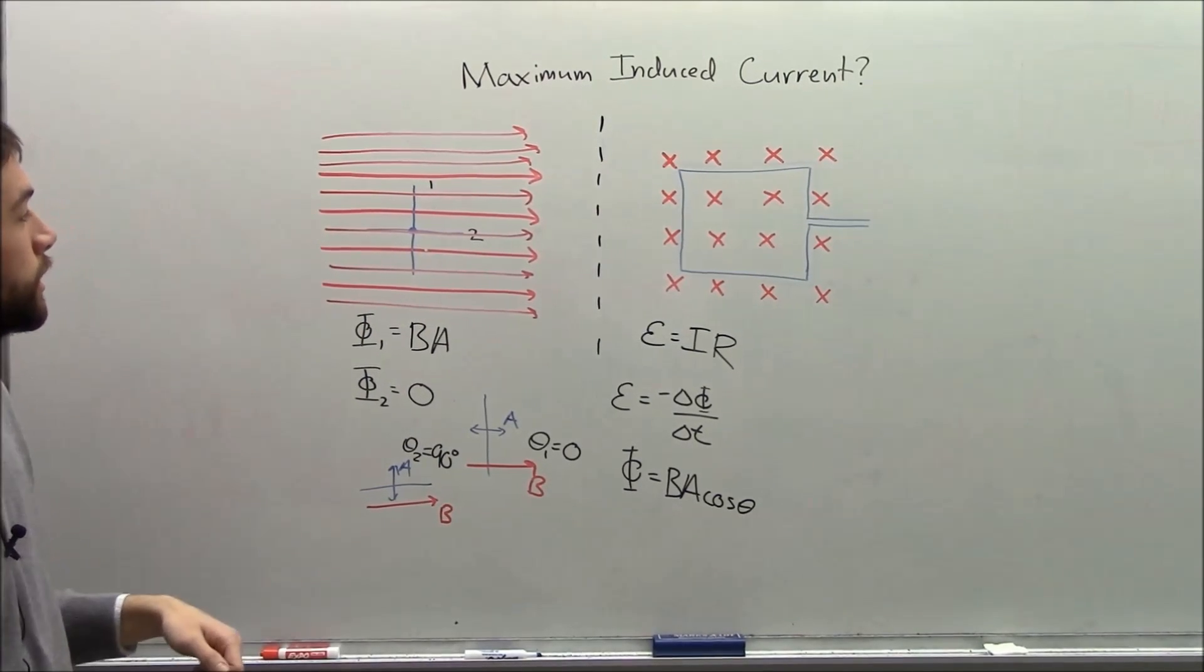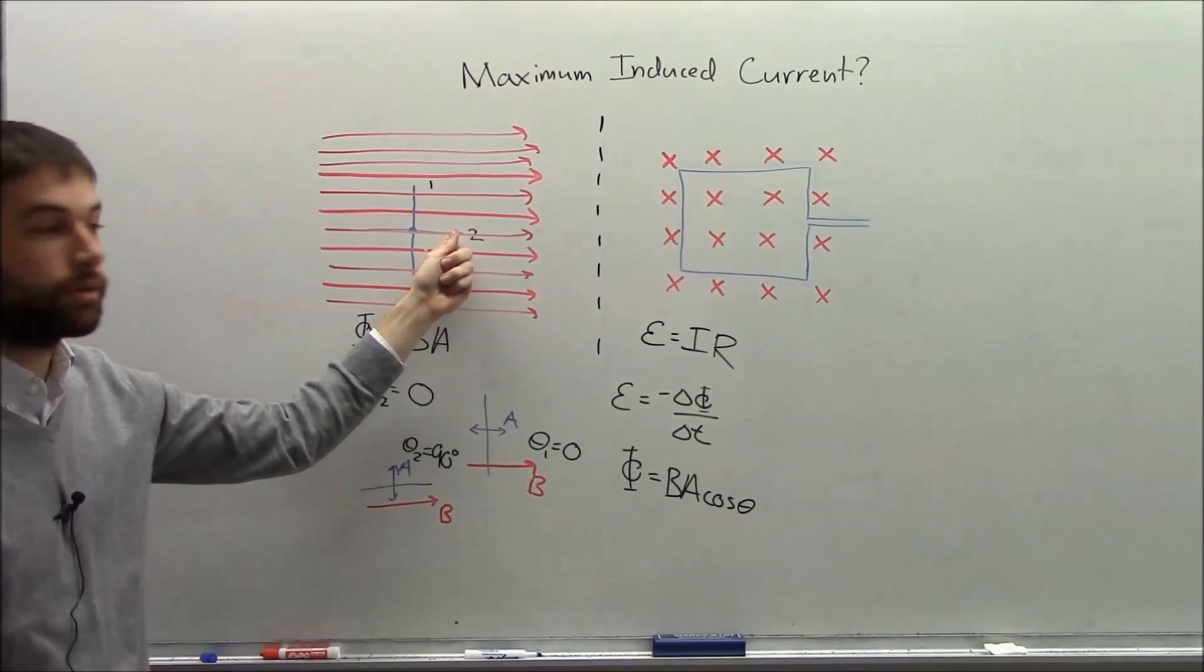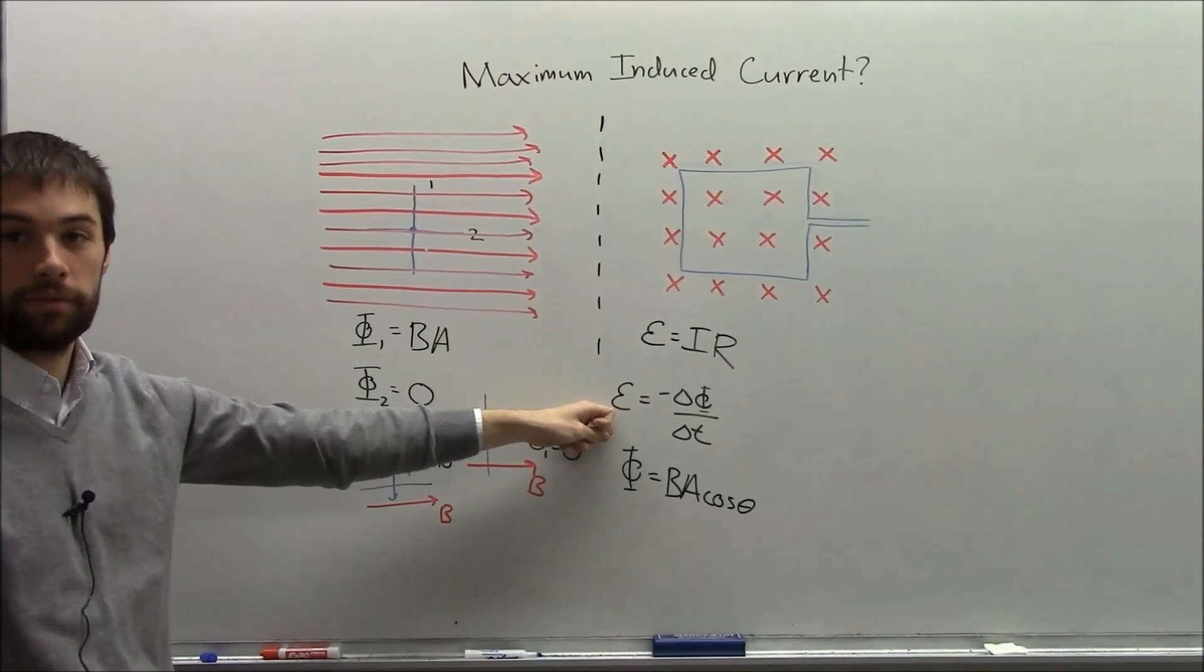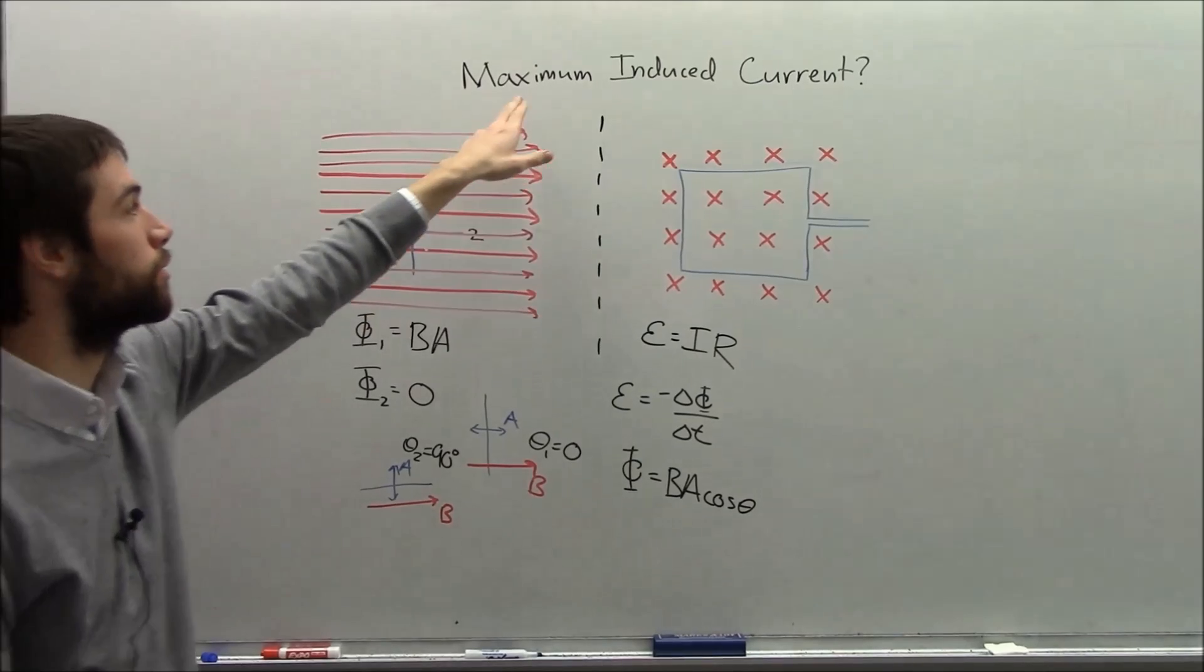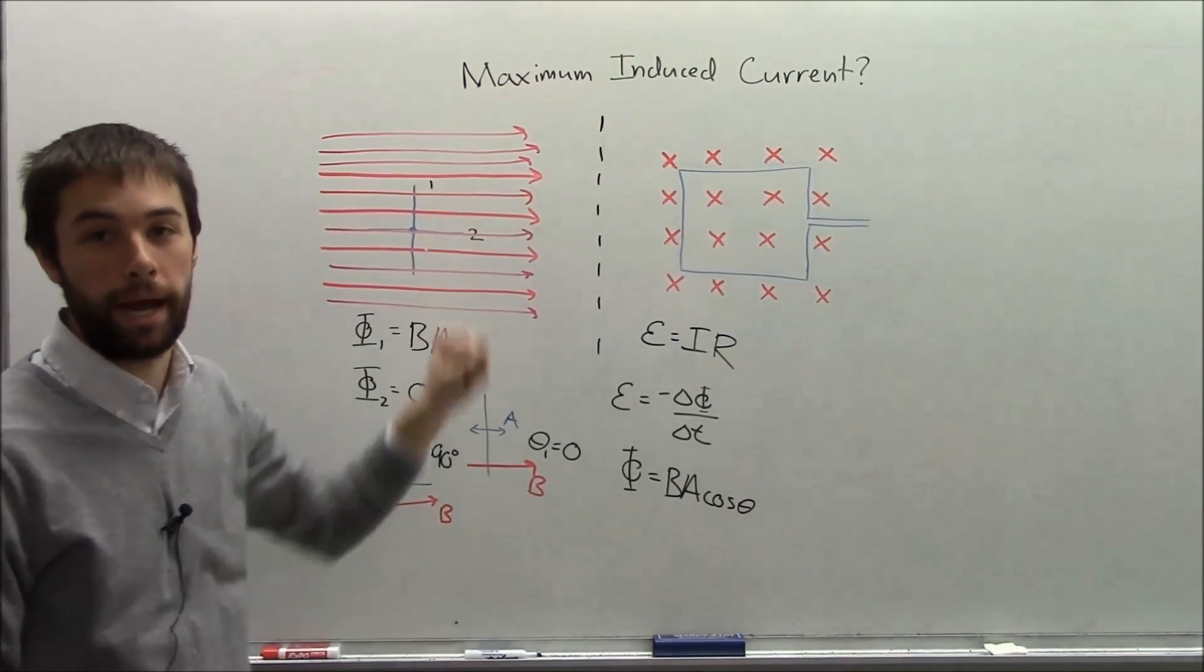So that tells us that in fact, it's position two that has the greatest EMF. So it's position two where the current induced is a maximum.